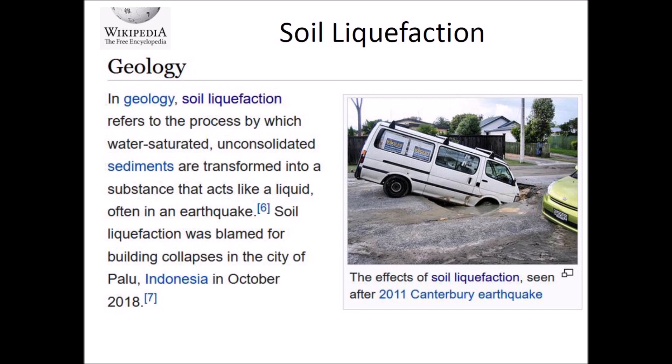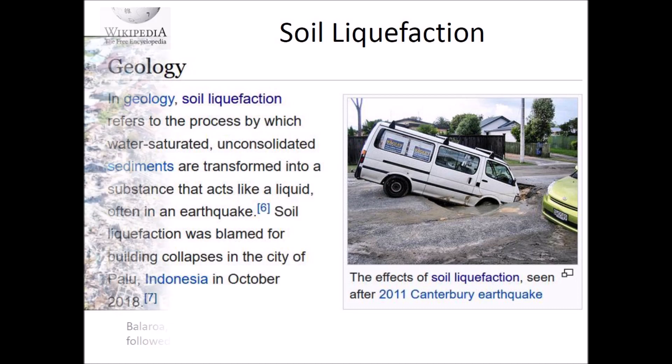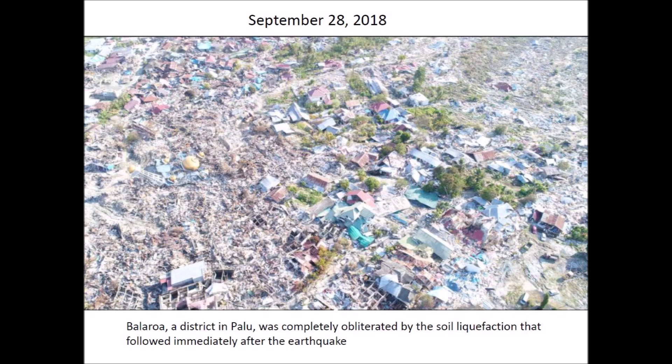Soil liquefaction was blamed for the building collapses in the city of Palu, Indonesia, in October 2018. On September 28, 2018, a large earthquake of magnitude 7.5 struck Indonesia. The epicenter was located 70 kilometers from the provincial capital, Palu, and was felt as far away as Malaysia. This event was preceded by a sequence of tremors, the largest of which had a magnitude of 6.1. Balaroa, a district in Palu, was completely obliterated by the soil liquefaction that followed immediately after the earthquake. In general, seismic vibrations of magnitude 6.0 or higher can cause liquefaction of saturated, unconsolidated soil.